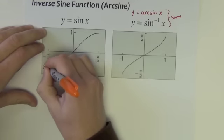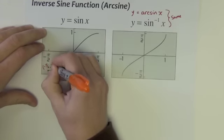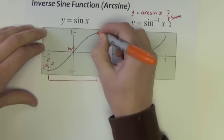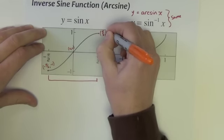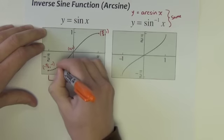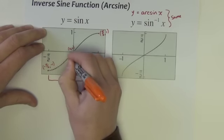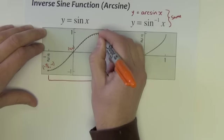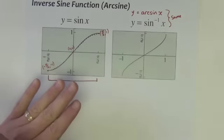This point, 0, 0. This point up here, pi over 2 comma 1. Anyway, we take all the points on this graph of sine x, all the x, y points, and we interchange them.